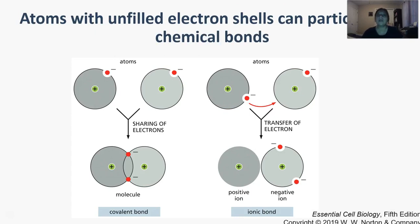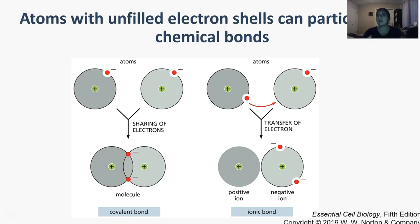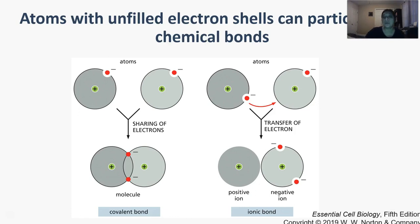Atoms with unfilled electron shells will fill that space or lose extra electrons through chemical bonds — that's how they get to a stable state. They can do this in two different ways: they can share electrons, forming a covalent bond, which is a stable interaction where they kind of make a marriage and hang out together. Or they can completely take away or gain an electron to create ionic bonds, in which case the atom that lost the electron becomes a positive ion and the atom that gained the electron has an extra negative charge and becomes a negative ion.